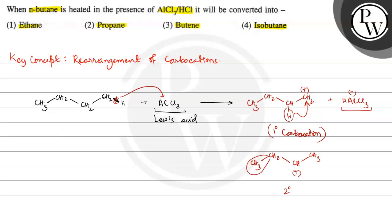If this methyl group migrates here, then there will be a 1-degree carbocation again. But again, through hydride shift, a 3-degree carbocation can be formed.